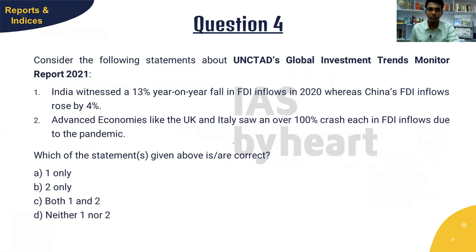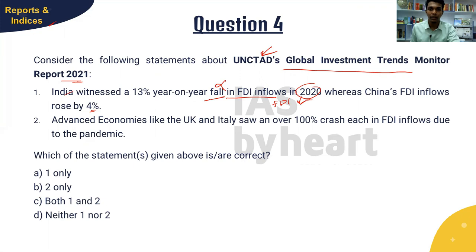The next question is about reports and indices. According to the Global Investment Trends Monitor Report of 2021 released by UNCTAD, India witnessed a 13% year-on-year fall in FDI inflows in 2020, whereas China's FDI inflows rose by 4%. This statement is false — it was actually a rise for India, not a fall. Advanced economies like the UK and Italy saw an over 100% crash each in FDI inflows, which is true. The answer is two only.